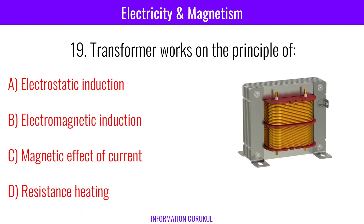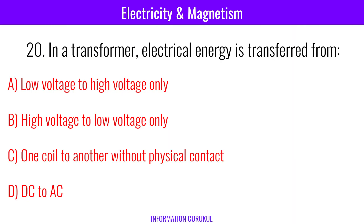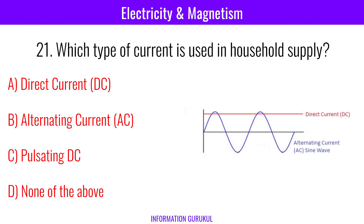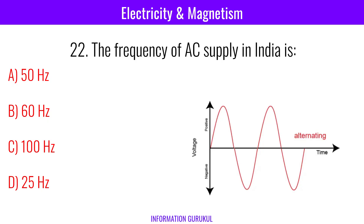A transformer works on the principle of electromagnetic induction. In a transformer, electrical energy is transferred from one coil to another without physical contact. Which type of current is used in household supply? Alternating current. The frequency of AC supply in India is 50 hertz.